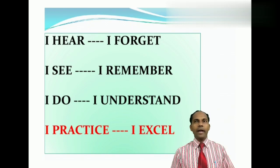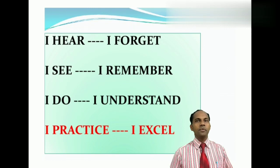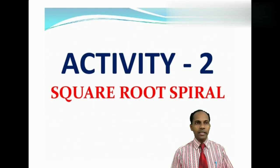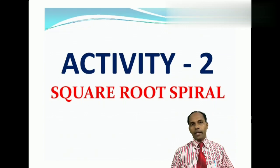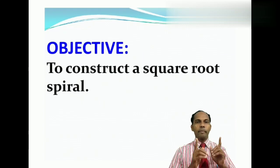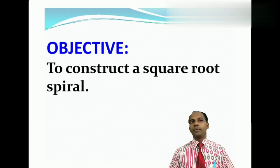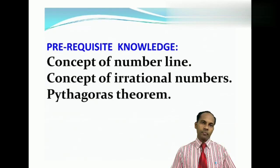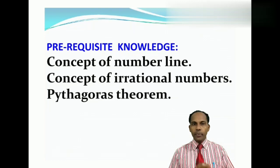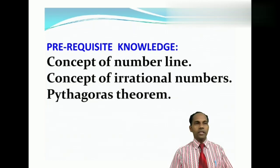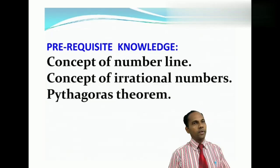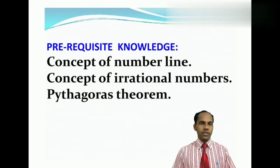So for your practice and to excel yourself, I am going to show you Activity 2, that is Square Root Spiral. The main objective of this activity is to construct a square root spiral. For that, pre-requested outreach is the concept of number line, concept of irrational numbers, and Pythagoras theorem.